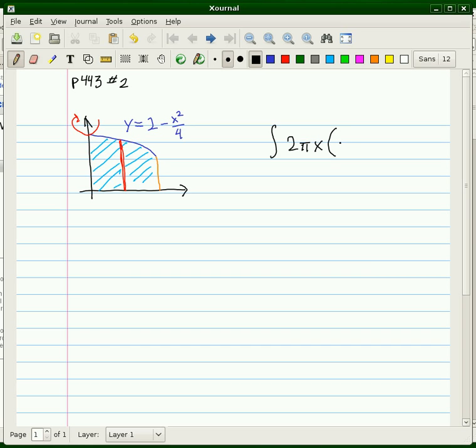In this case, the lower bound is y equals 0, so we simply have to put in the top function, which is 2 minus x squared over 4.